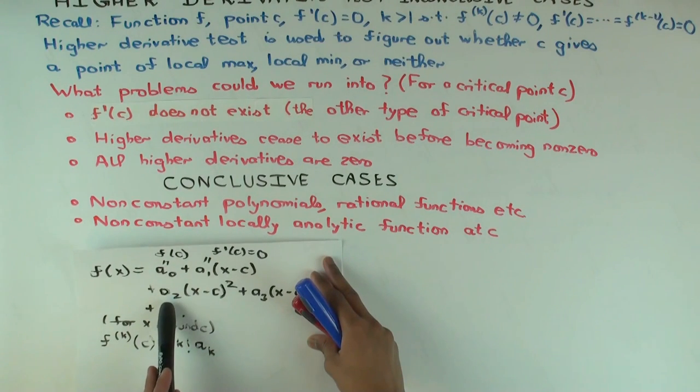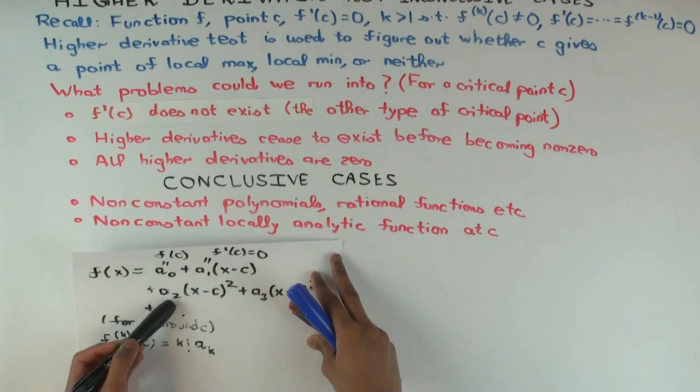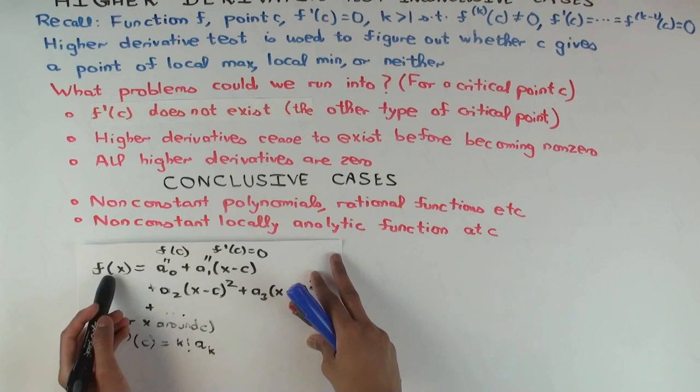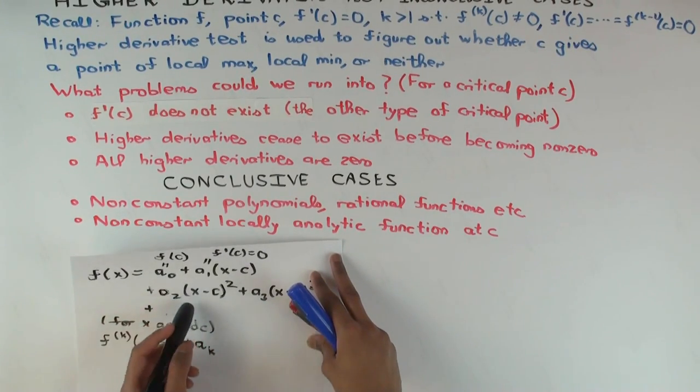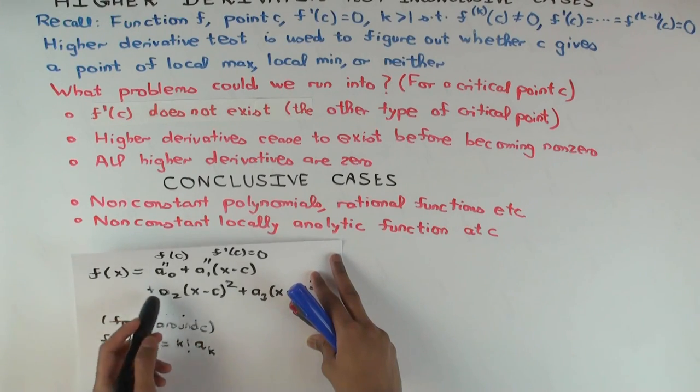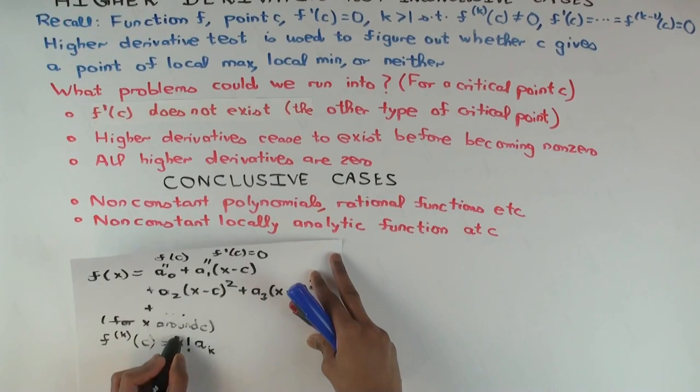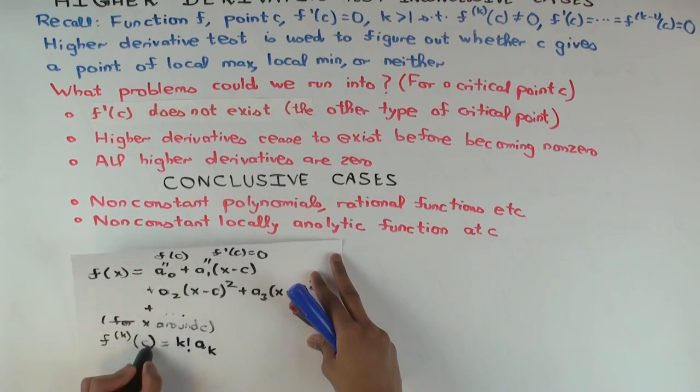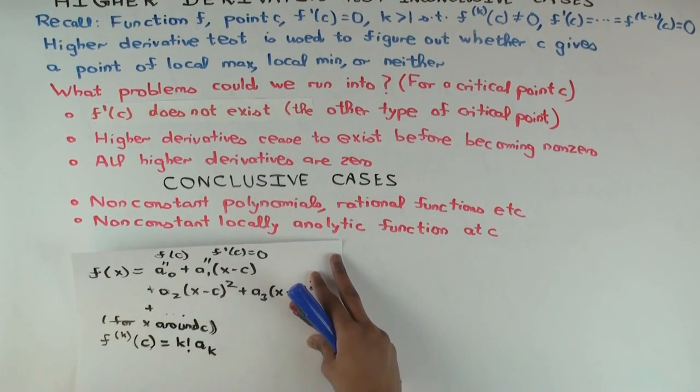And what about A2? Well, you can do some calculation and find that f double prime at c is just 2A2. The reason is you first calculate f double prime of x by differentiating twice, and then you plug in x equals c and higher order terms become 0. And so you just get f double prime at c is 2A2. And in general, what you'll get is the kth derivative of f at c is k factorial times Ak, where Ak is the coefficient of x minus c to the k.